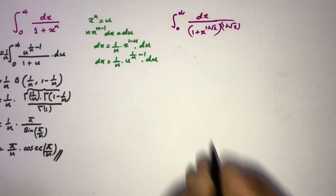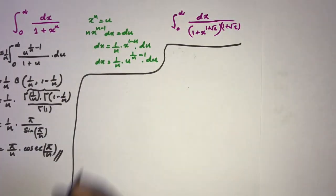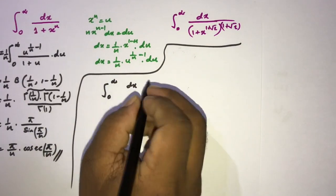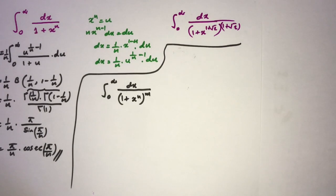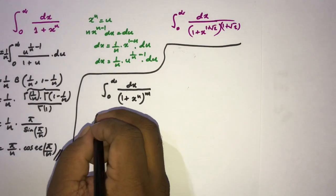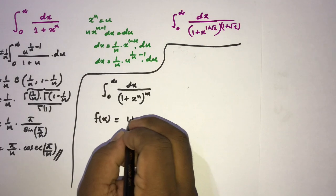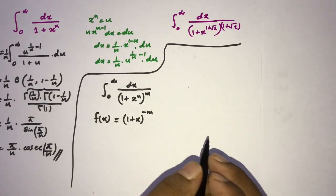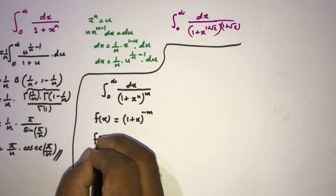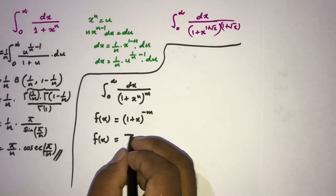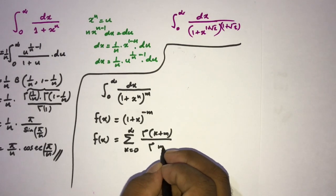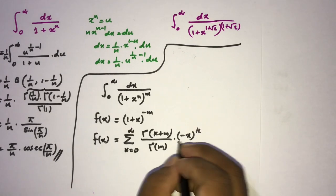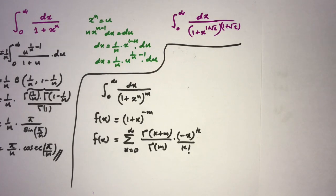To evaluate this generalized integral, I define f(x) = (1 + x)^(-m). Using the binomial theorem, we can write f(x) as an infinite series: the sum from k = 0 to infinity of Γ(k + m) over Γ(m) times (-x)^k over k!. This form is familiar because it matches the structure required for Ramanujan's Master Theorem.